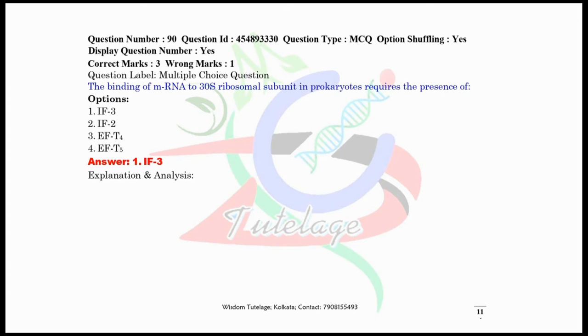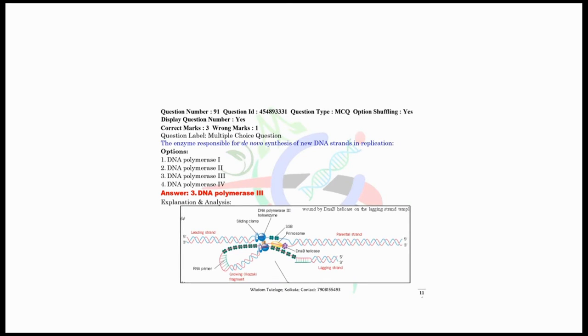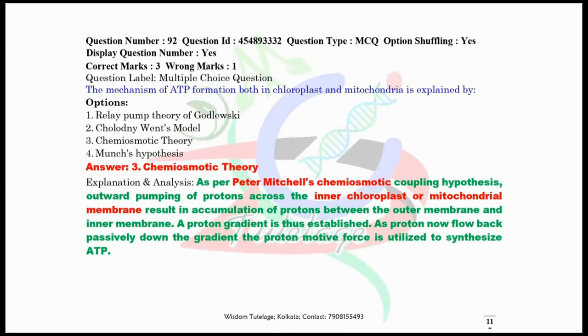Question number 90, the binding of mRNA to 30S ribosomal subunit in prokaryotes requires the presence of IF3, that means initiation factor 3. There are three different types of initiation factors: IF1, IF2, and IF3. I have given the pictorial guide for you. Now question number 91, the enzyme responsible for de novo synthesis of new DNA strands in replication is DNA polymerase 3. I have given here also another pictorial guide. Now question number 92, the mechanism of ATP formation both in chloroplast and mitochondria is explained by the chemiosmotic theory, which is given by Peter Mitchell.